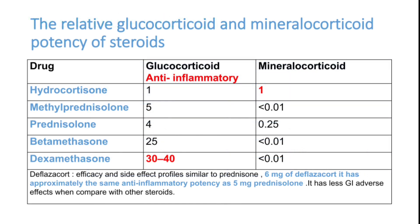Now we will see the relative glucocorticoid and mineralocorticoid potency of each type of steroid. Glucocorticoid potency is equivalent to anti-inflammatory action; mineralocorticoid potency equals water and sodium retention. Hydrocortisone potency is taken as the benchmark of one to one. Dexamethasone is the most potent anti-inflammatory drug — very cheap compared to others — with 30 to 40 times glucocorticoid action compared to hydrocortisone. Methylprednisolone is only 5, prednisolone is only 4, and betamethasone is 25. So dexamethasone is a very good anti-inflammatory drug and also very cheap.